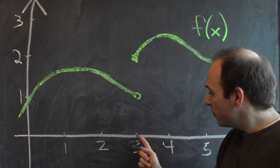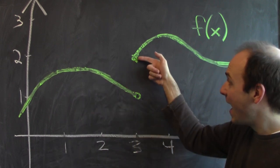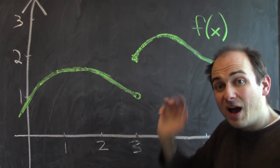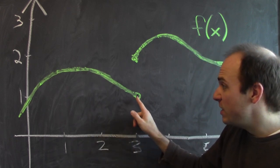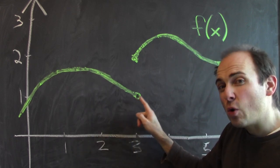And indeed, if I plug in numbers that are just a little bit above 3, I get out numbers that are close to 2. On the other hand, if I plug in numbers that are a little bit less than 3, I get out numbers that are close to 1.